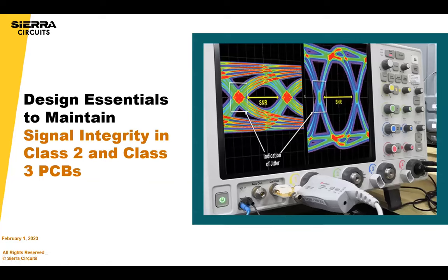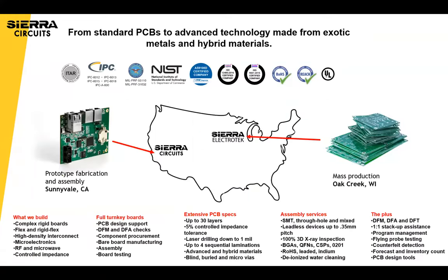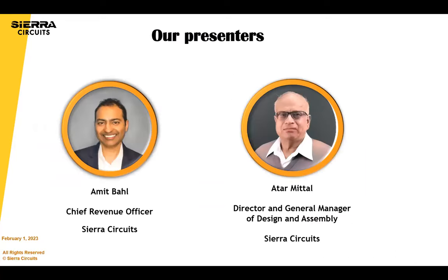Today's webinar is the Design Essentials to Maintain Signal Integrity in Class 2 and Class 3 PCBs. One slide about Sierra: we provide the full levels of services from complex PCBs to standard PCBs, assembly component services. We recently added a supply chain department and also acquired a company in Wisconsin that does mass production, really trying to provide the full suite of services to our customers. Please ask your questions during the presentation so that the design team can answer.